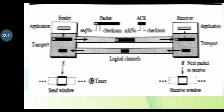Next, we will discuss sequence numbers. This protocol uses sequence numbers and acknowledgement numbers. A field is added to the packet header to hold the sequence number of that packet. One important consideration is the range of sequence numbers. When we want to minimize the packet size, there is a need to find the smallest range that provides unambiguous communication.